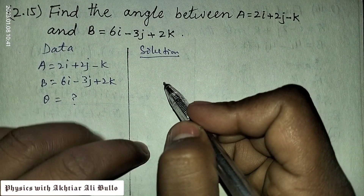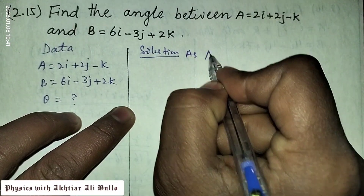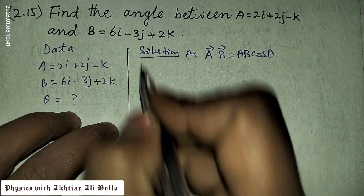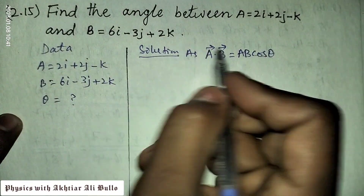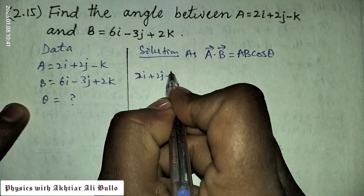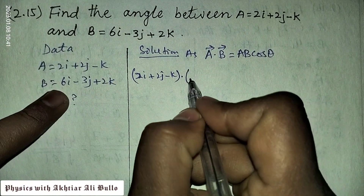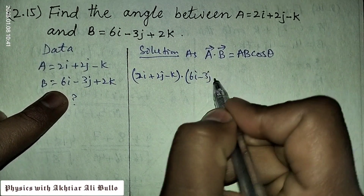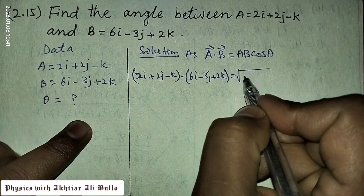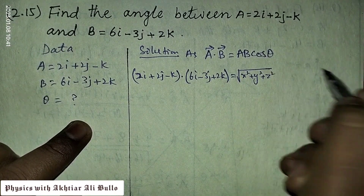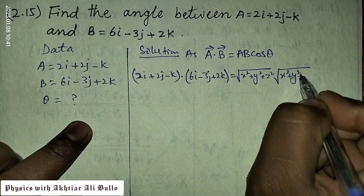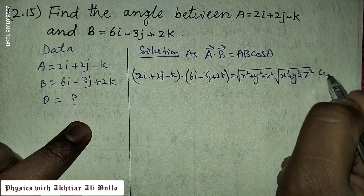For the solution we will use the formula: a dot b is equal to ab cos theta. So by putting in the given values, the value of a is 2i + 2j - k, dotted with b which is 6i - 3j + 2k, is equal to the magnitude of a — the square root of x squared plus y squared plus z squared — times the magnitude of b, also the square root of x squared plus y squared plus z squared, into cos theta.